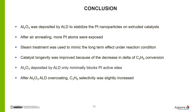In conclusion, aluminum oxide was deposited by ALD to stabilize the Pt nanoparticles on the industrial extruded catalyst. After air annealing, more Pt atoms were exposed, and steam treatment was used to mimic the long-term effect under reaction conditions. The catalyst longevity improved after ALD overcoating, aluminum oxide deposited by ALD only minimally blocks the Pt active sites, and the propylene selectivity was slightly increased after ALD overcoating.